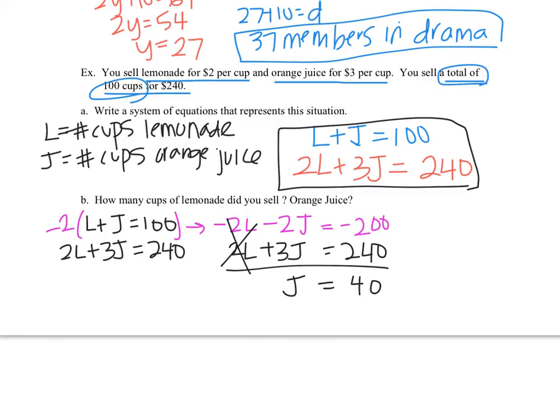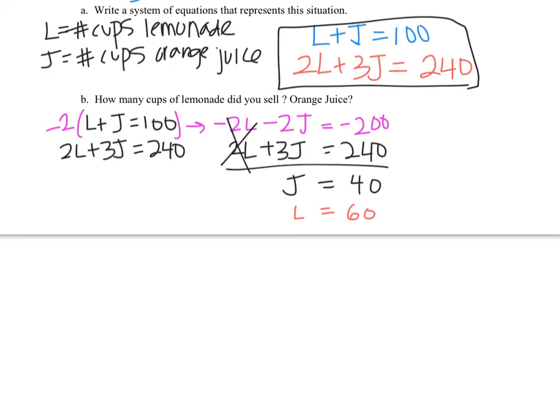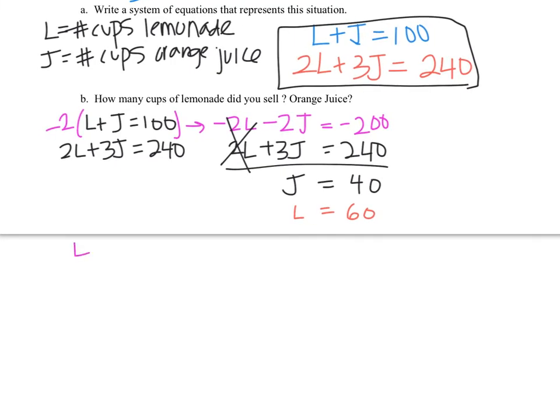Now we pick whichever equation is easier, and you can probably even do this mentally. I mean, if the total number of cups is 100, you don't have to write it out. You can just say that L is equal to 60. But the answer is not J equals 40, L equals 60. The answer is 40 cups of OJ and 60 cups of lemonade.